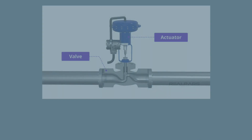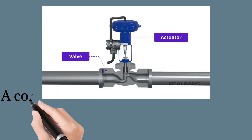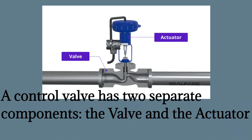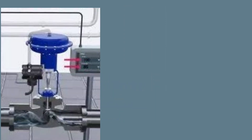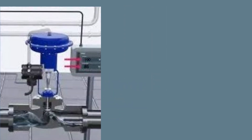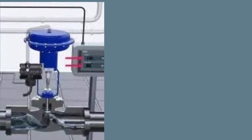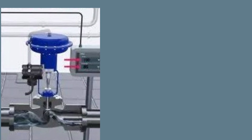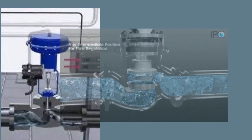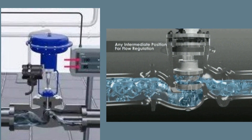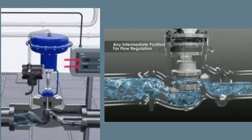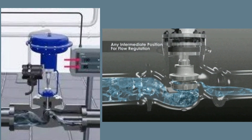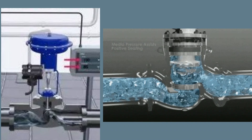A control valve has two separate components: the valve and the actuator. The actuator is the device connected to the valve through the valve stem that provides the force required to move the valve. The actuator can be controlled electrically, pneumatically, or hydraulically. The most common and most reliable is the pneumatic actuator.